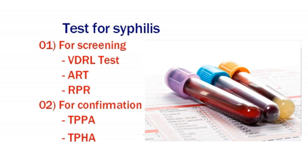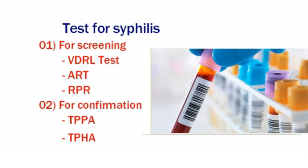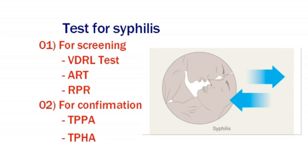The second screening test is the ART test, that means the Automated Reagent Test. And the third one is the RPR test, that means the Rapid Plasma Reagent test. For the confirmation of syphilis infections, we are commonly using TPPA and TPHA — TPPA means the Treponema pallidum Particle Agglutination test.